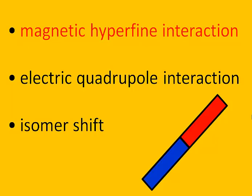That gives the three types of hyperfine interactions immediately. You have effects that depend on the bar magnet in the nucleus — this will be the magnetic hyperfine interaction. You have an effect due to the shape of the nucleus — this will be the electric quadrupole interaction. And you have an effect due to the volume of the nucleus — that will be the monopole shift, or in some experimental contexts, the isomer shift. We will go through these three types, starting with the bar magnet.